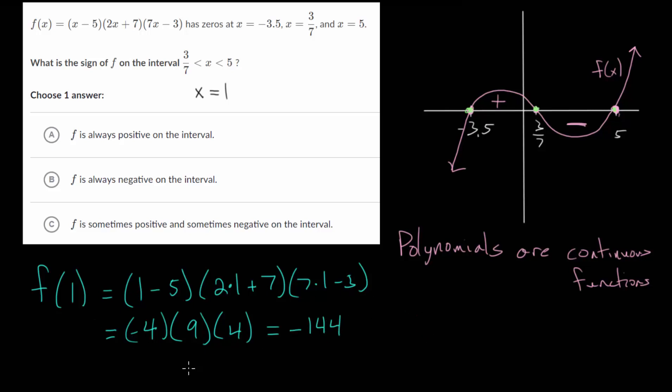But like I said you don't actually have to find the exact value. What you really need to do is just look at each of these sets of parentheses and determine if it would be positive or negative. So for instance 1 - 5 that's negative. This is positive and this is positive.